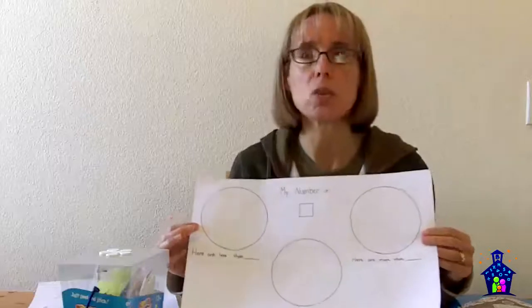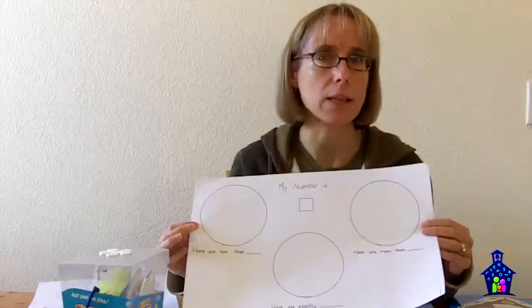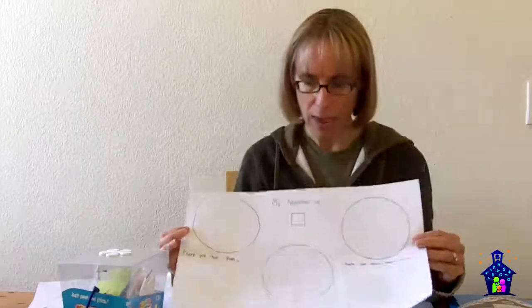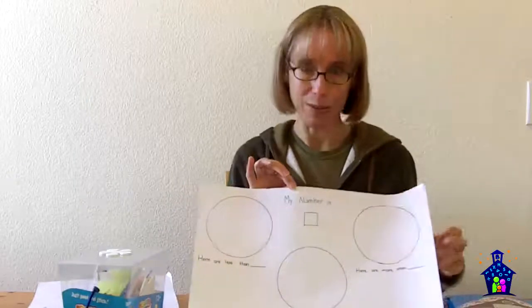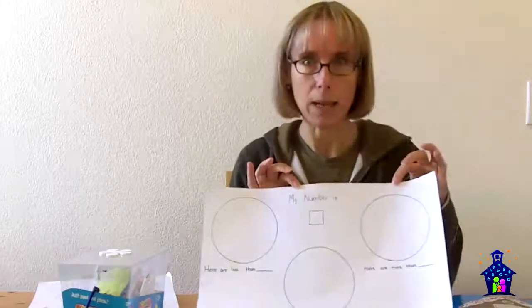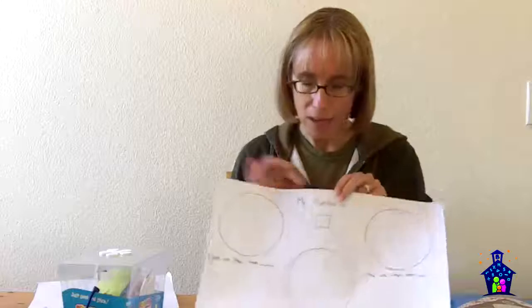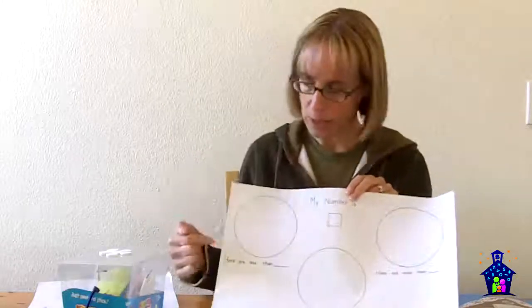Okay, so what you're going to do is choose a number that your child is becoming familiar with, and you're going to write that number, or they're going to write that number right here where it says my number is. And then there are three circles here, and you're going to read these to them.